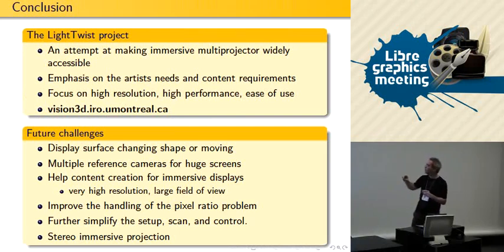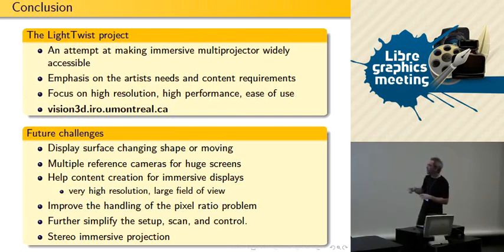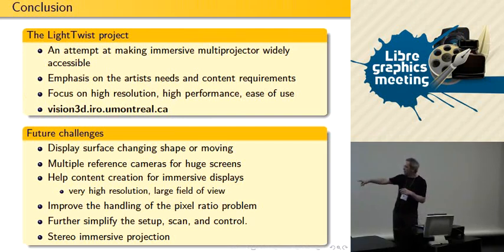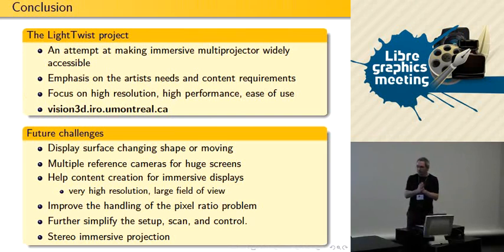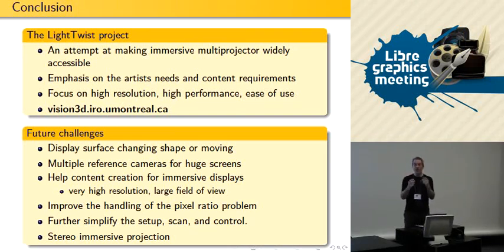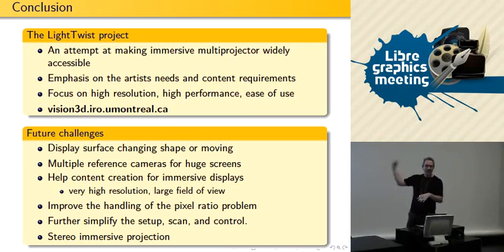The LightWist project is available as open source now and will be developed in close ties with Hugin in the future. There are many future challenges, but one worth mentioning is stereo-immersive projection, which we're working hard on right now. We should be able to show an example with red-blue glasses — we figured a way to do stereo projection on 360 degrees, so many people can see in stereo in different directions at the same time.